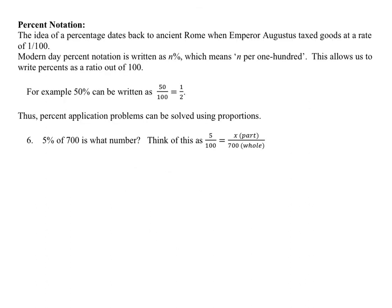The next thing is an introduction to percent notations. We did a little bit of this in module 1. The idea of percentages dates back to ancient Rome. The meaning of percent is per 100, so it's always out of 100. An example is 50% can be written as 50 over 100 or 1/2.